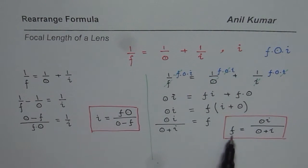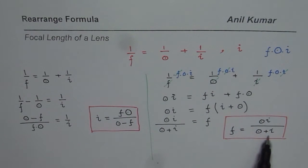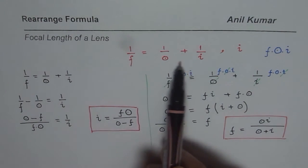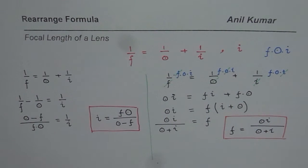So given object distance and image distance, we can find the focal length of the lens using this formula directly, rather than doing a lot of math from the standard formula. I hope these strategies help you rearrange similar formulas and work efficiently in such cases. Thank you and all the best.